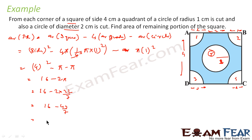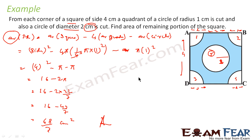Solving: 16 minus 2 into 22 by 7, that is 16 minus 44 by 7, which becomes 68 by 7. The unit is centimeter, so this will be centimeter squared because we are talking about area. Area of shaded region is 68 by 7 centimeter squared. Very simple to solve — just understand how to get the shaded region. In this case, we took the whole square, removed these areas 1, 2, 3, 4, 5, and got the area of the shaded region.